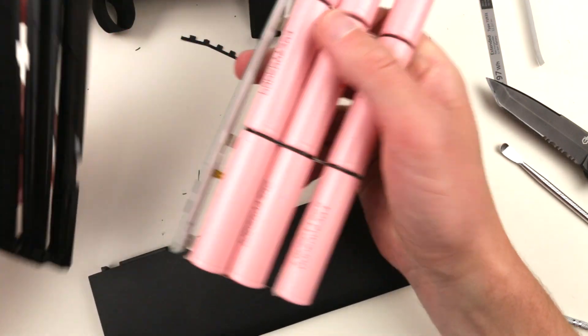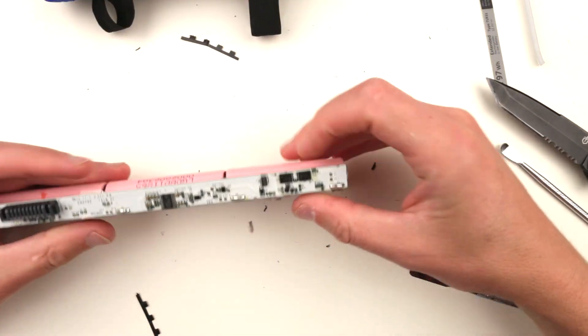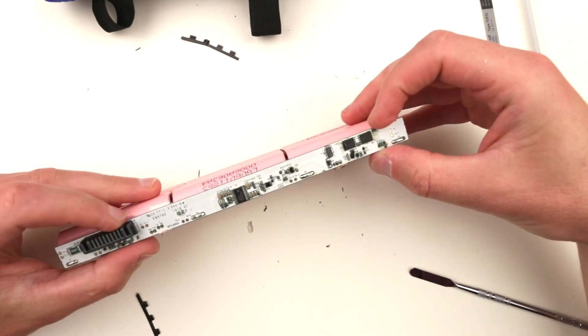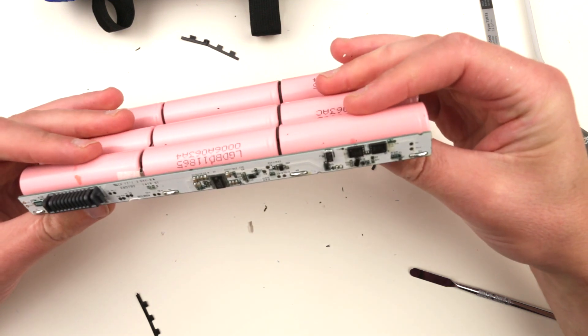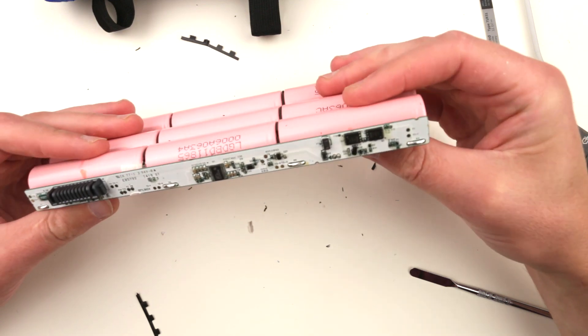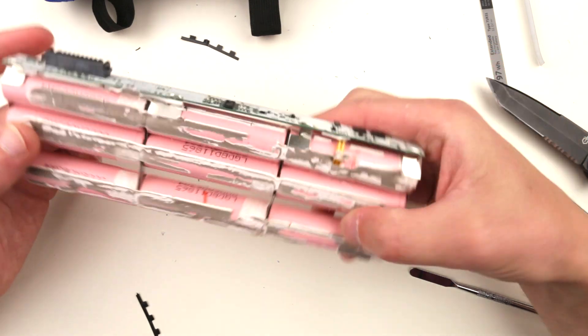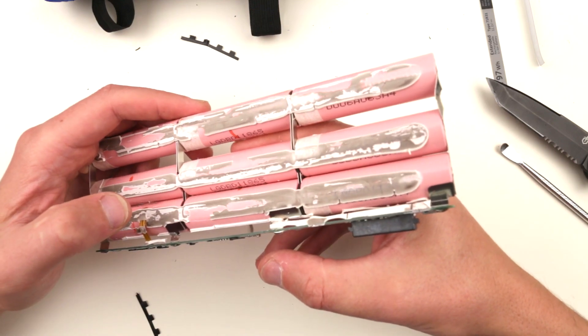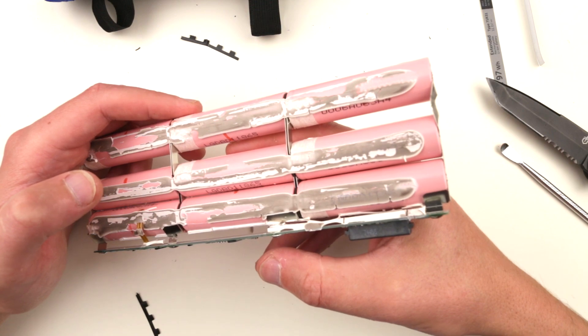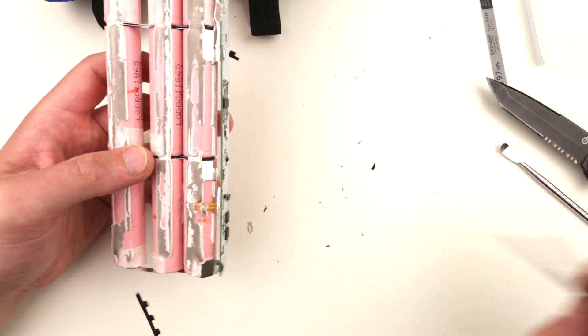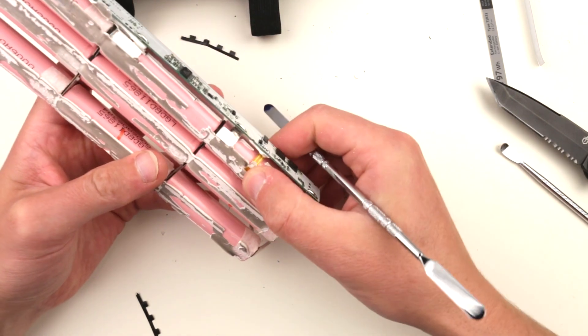This is what we have here. This is a Dell battery controller, charging controller. It consists of LG DB 18650s.